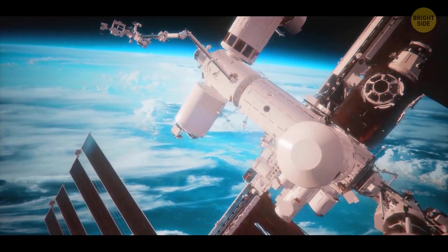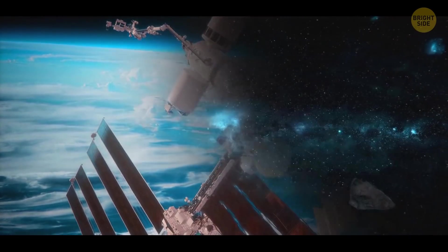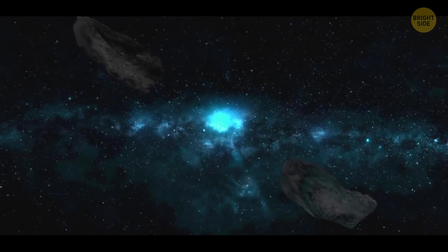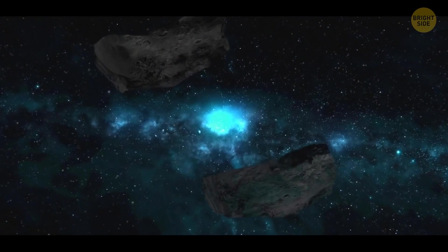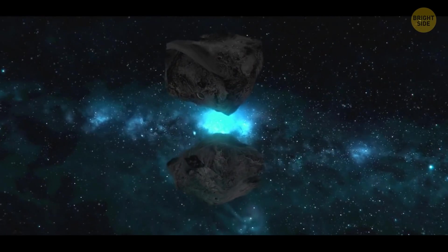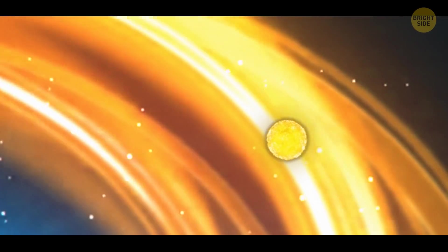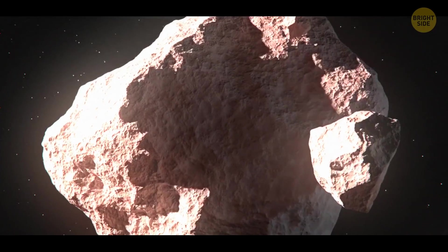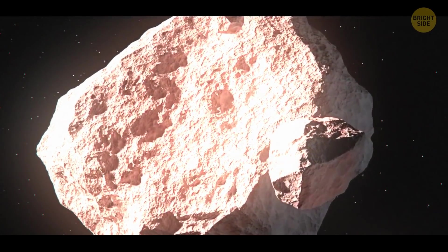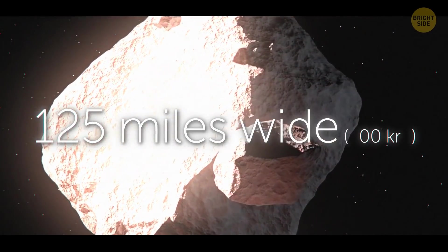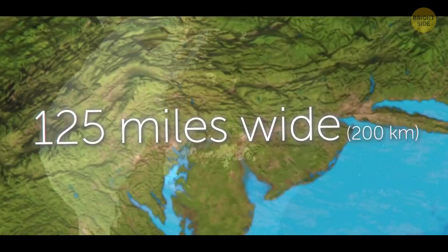Scientists now believe that Fomalhaut b was never actually a planet in the first place. It was just the leftovers of two big rocks smashing together. From far away, that kind of massive collision would actually just look like a yellow dot. These two colliding space rocks must have been at least 125 miles wide. That's like DC to Philadelphia wide.